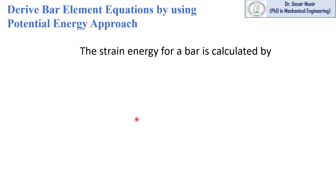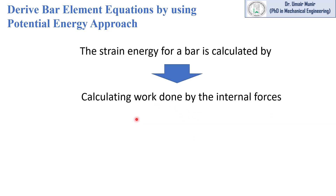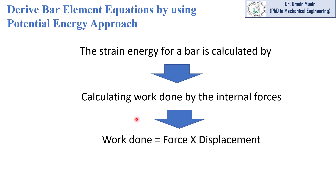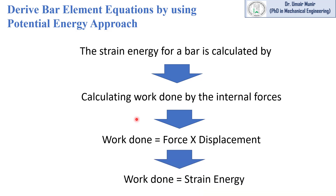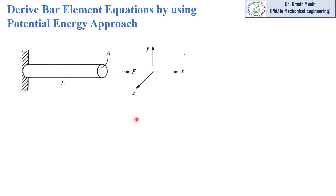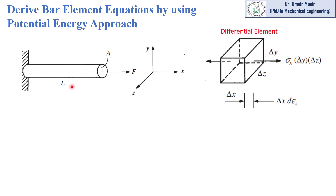The strain energy of a bar is calculated by calculating the work done by the internal forces. Work done is equal to force into displacement, and this work done is actually the strain energy. Consider a bar element on which a force is acting on the cross-sectional area A. This bar has a length L. Consider a small differential element having three sides delta x, delta y, and delta z.